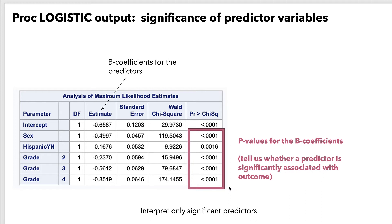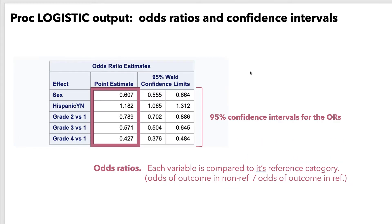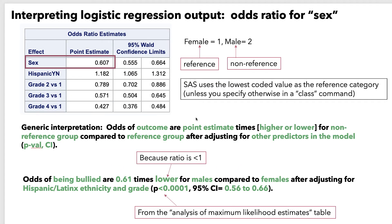Remember, we should interpret only significant predictors. If a predictor is not significant, we say it was not significantly associated with the outcome, adjusting for the other variables in the model, and include the p-value and confidence interval at the end of the sentence. Now we can interpret the odds ratios for each significant predictor. For a categorical variable, the odds ratio is the odds of the outcome in the non-reference category compared to its reference category. Let's start by interpreting the odds ratio for sex. Female is coded 1 and male is coded 2, so female is the reference category. The odds of being bullied are 0.61 times lower for males compared to females after adjusting for the other variables in the model. The p-value and confidence intervals come from these tables.